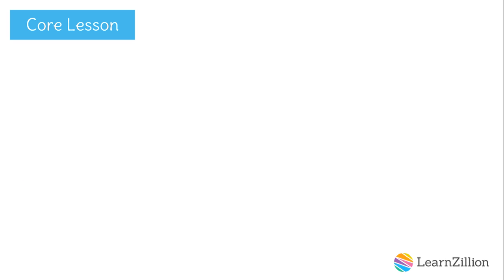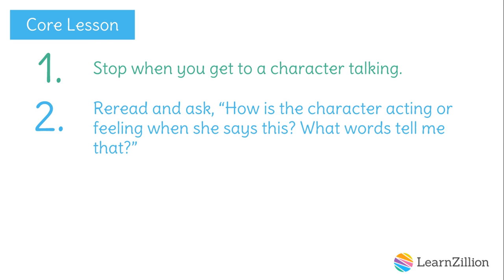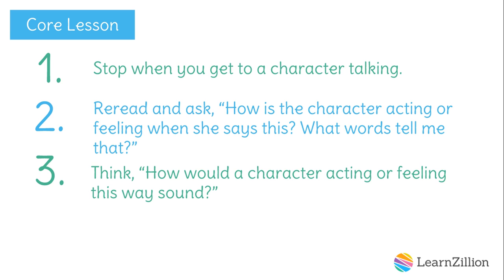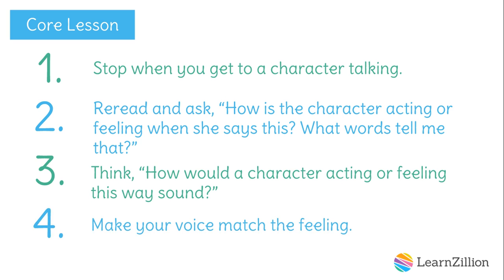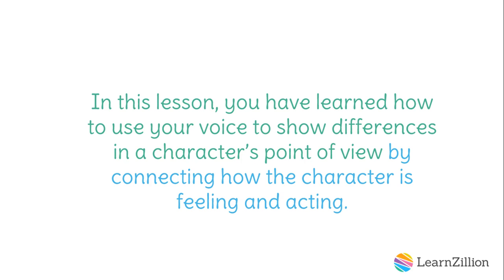Today we were able to make our voices reflect the character's point of view by following these steps. First, we stop when we get to a character talking. Second, we reread and ask, how is a character acting or feeling when she says this? What words tell me that? Third, we think, how would a character acting or feeling this way sound? And fourth, we make our voice match the feeling. In this lesson, you have learned how to use your voice to show differences in a character's point of view by connecting how the character is feeling and acting.